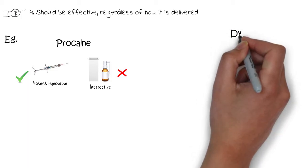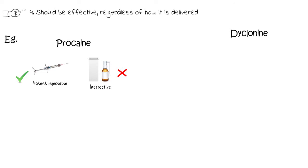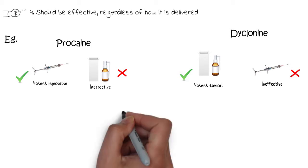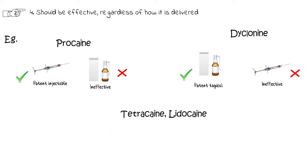On the other hand, drugs like diaclonine, which is a potent topical anesthetic, cannot be injected because it has tissue irritating properties. While some drugs like tetracaine and lidocaine can be used as effective local anesthetics in both topical as well as injectable forms in acceptable concentrations.